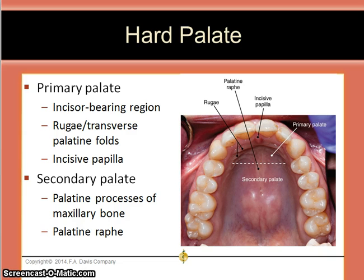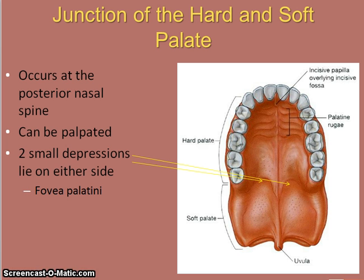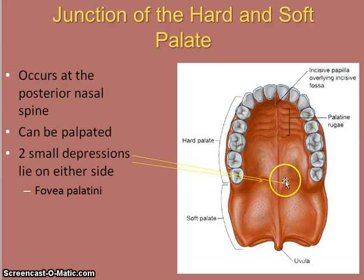The secondary palate consists of the palatine processes of the maxillary bone and the palatine raphe. The junction of the hard and soft palate can be palpated, and there are small depressions on each side that contain the fovea palatine. Between them, the posterior nasal spine may be palpated.